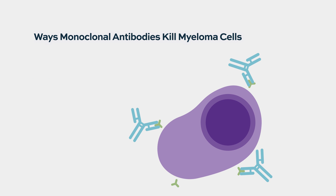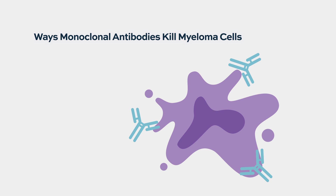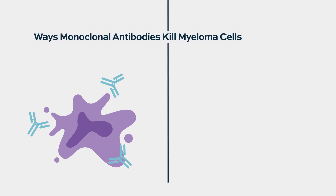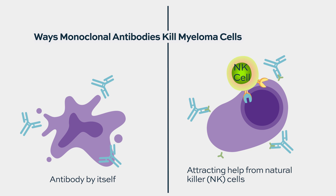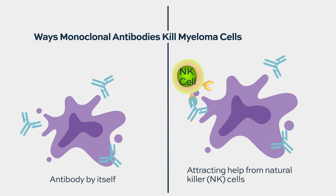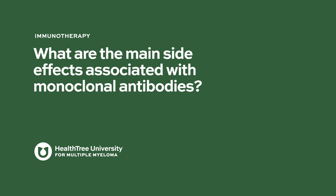By binding to the myeloma cell, the cell undergoes apoptosis, which means cell death. We also know that this process attracts other cells of the immune system — for instance, NK cells, natural killer cells. When daratumumab binds to myeloma cells, those natural killer cells are attracted and help to kill the myeloma cell. So it's a combination of direct killing by the monoclonal antibody and attraction of other immune cells.